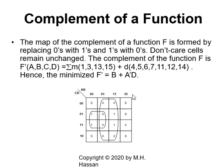How do we find the complement of a function? If you look at the map and replace every cell with 0 to 1 and every cell with 1 to 0, and keep the don't cares unchanged, we find the complement of the function. The complement of the function is the sum of terms 1, 2, 3, 13, 15, with don't care terms 4, 5, 6, 7, 11, 12, and 14.